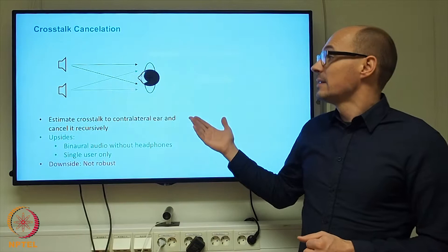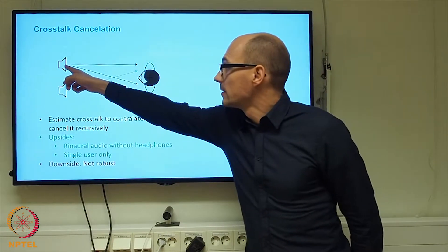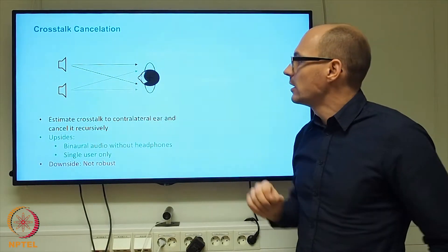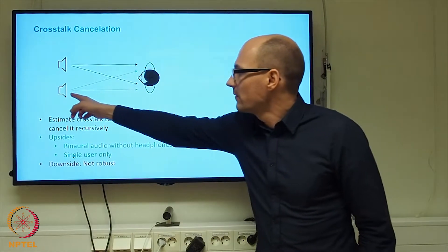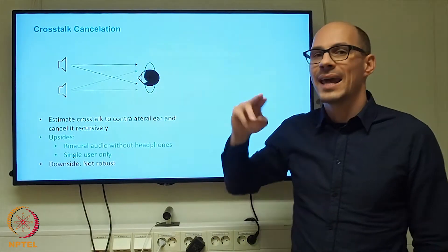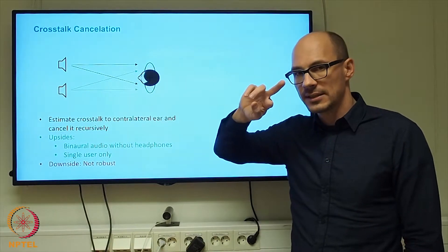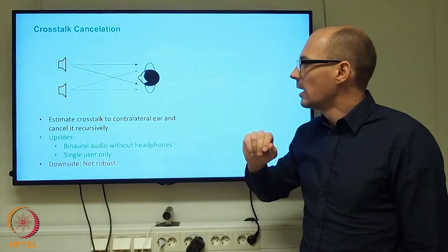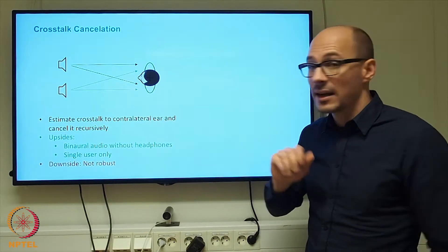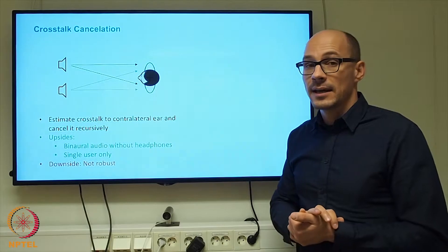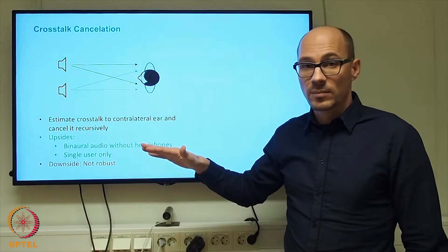The way these systems work is that the crosstalk from, say, the right loudspeaker to the left ear is predicted, and then the left loudspeaker sends a signal to cancel out that crosstalk. The crosstalk is predicted and a signal is radiated at the right moment with the opposite algebraic sign.